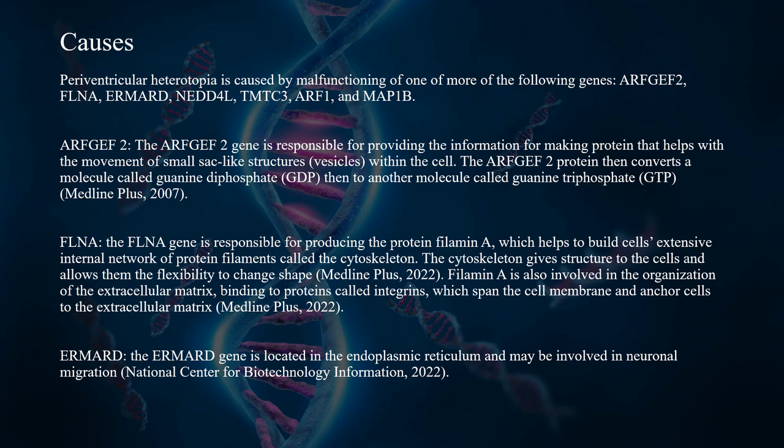The ARFGEF2 gene is responsible for providing the information for making protein that helps with the movement of small cyclic structures within the cell. The ARFGEF2 protein then converts a molecule called guanine diphosphate to another molecule called guanine triphosphate.